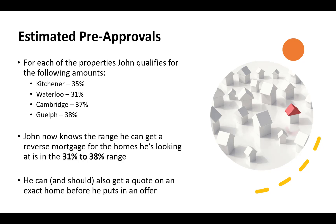John gets the following amounts for each of the four example properties: the property in Kitchener, 35% reverse mortgage; Waterloo, 31%; Cambridge, 37%; Guelph, 38%. These are completely made up numbers — what I want to show you is that the house and the location will dictate the reverse mortgage amount and it's going to change, with subtle small differences. Based on this, John now has a rough idea that he can get 31 to 38% for a reverse mortgage, which helps him go out and look for homes that fit in that range based on his down payment.